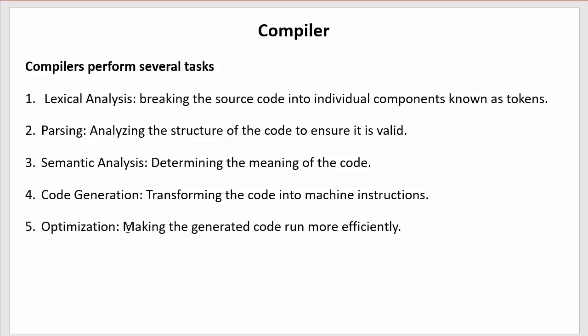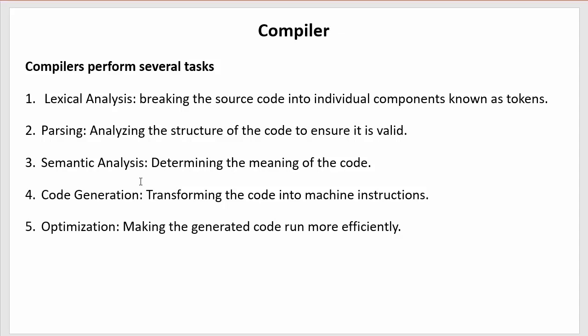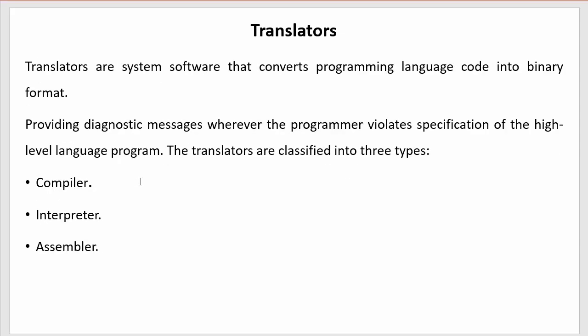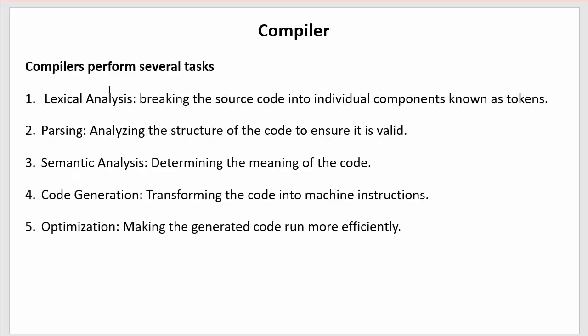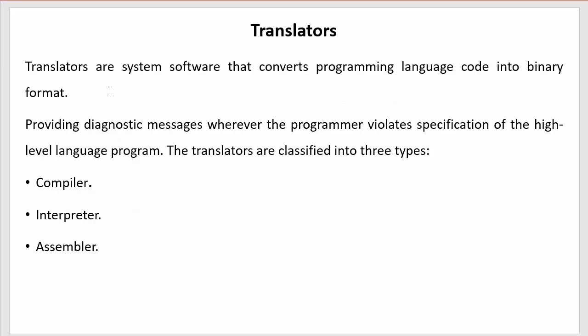The last task is optimization — making the generated code run more efficiently. If errors are encountered, they are notified to the programmer, and once all errors are removed, the generated code is executed efficiently. These are the main duties of a compiler. That's all for this video — in the next video I will discuss the interpreter.